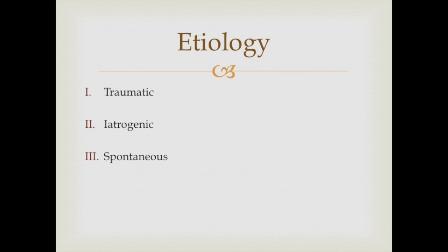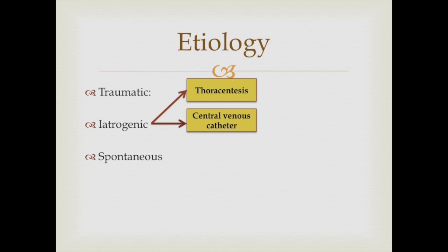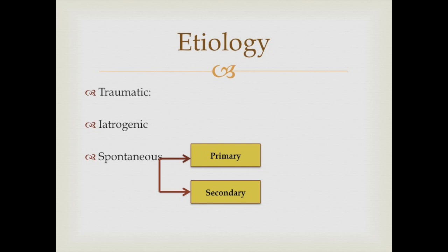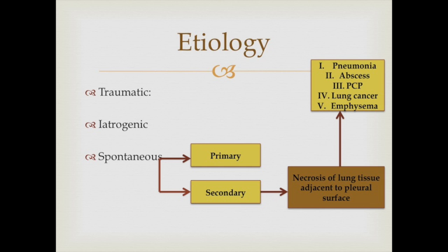We classify the causes of pneumothorax into traumatic, iatrogenic, and spontaneous. Traumatic is further subclassified into penetrating and non-penetrating. Iatrogenic is further subclassified into thoracocentesis and central venous catheter. Spontaneous is further subclassified into primary, which is not associated with lung disease, and secondary, which is associated with lung disease such as pneumonia, abscess, lung cancer, and emphysema.